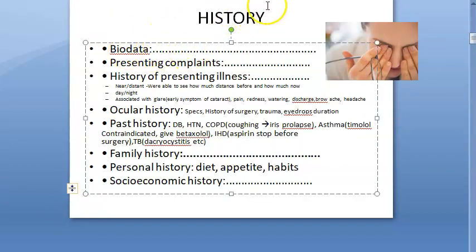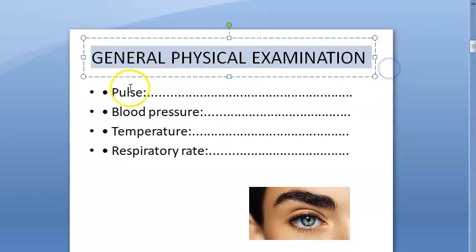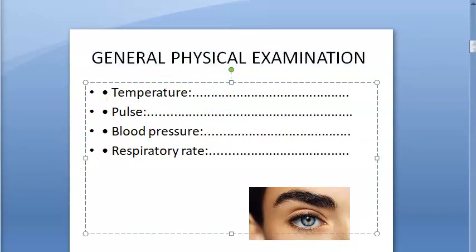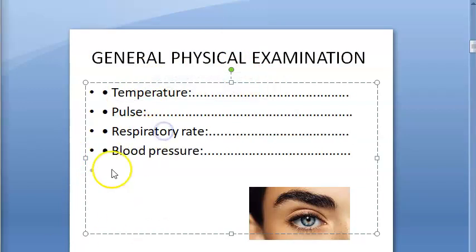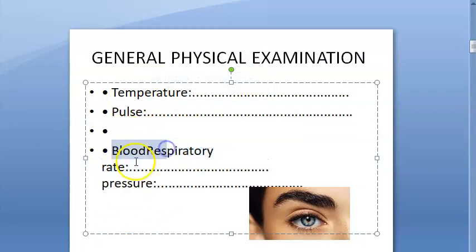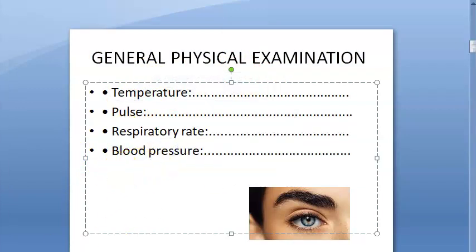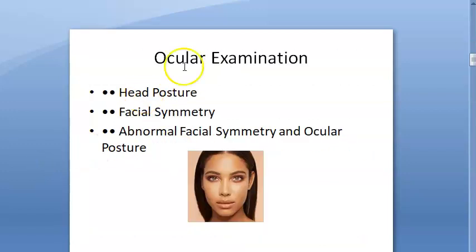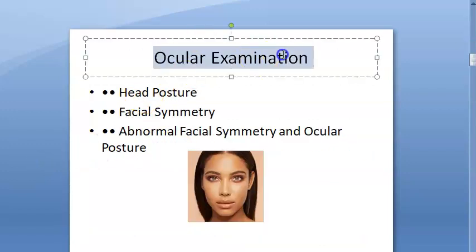Moving to general physical examination: record temperature, pulse, respiratory rate, and blood pressure. Do not forget general physical examination before proceeding to ocular examination.